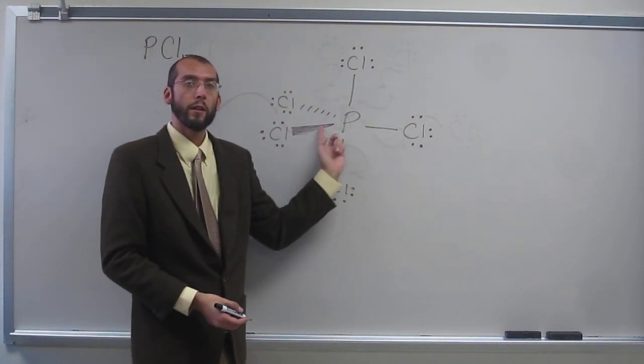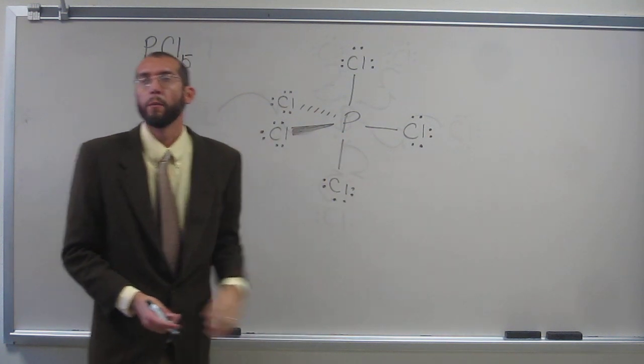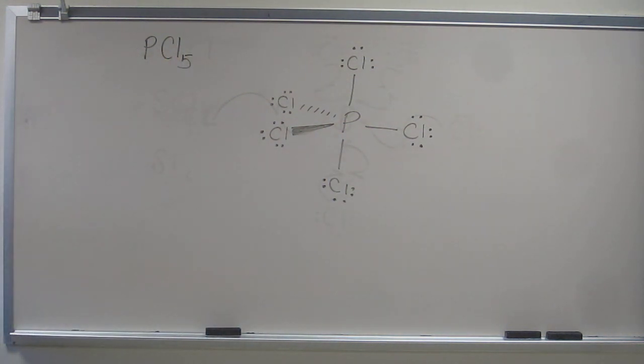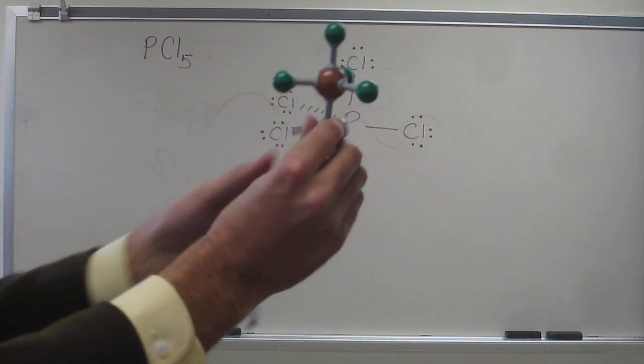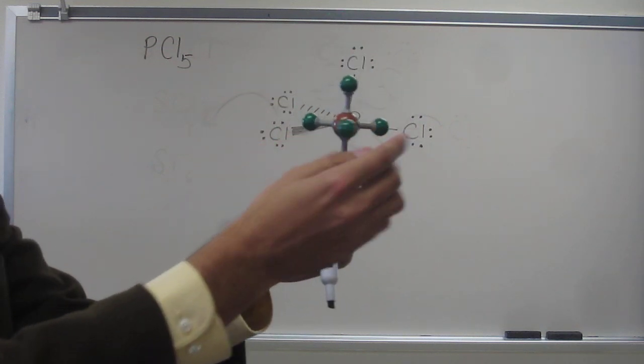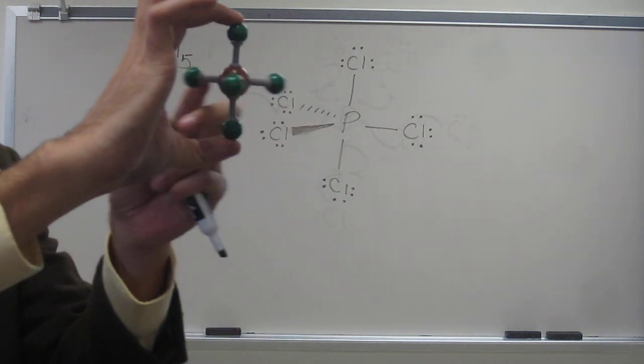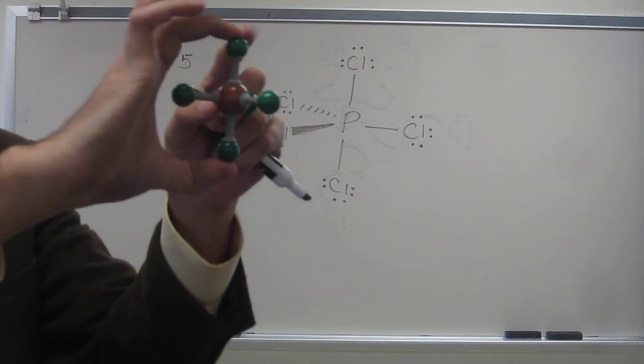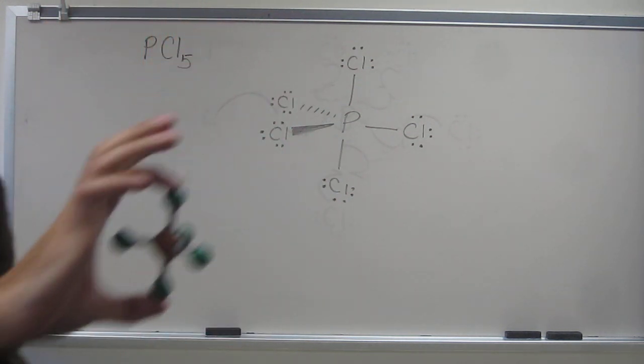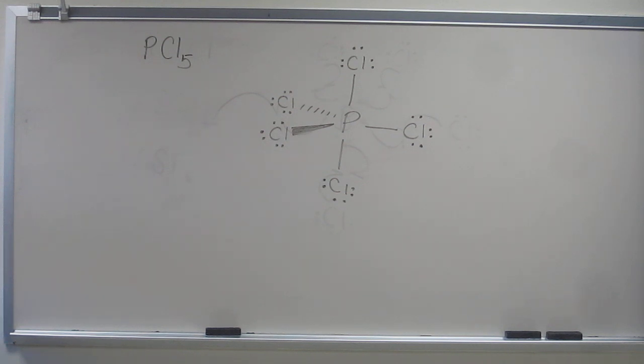So we call the ones around the center equatorial, like an equator, right? Equatorial like an equator. So if you want to look, those three are the equatorial. These two are the axial ones. This one and this one. Is everybody okay with that? Can you say it again? Equatorial and axial.